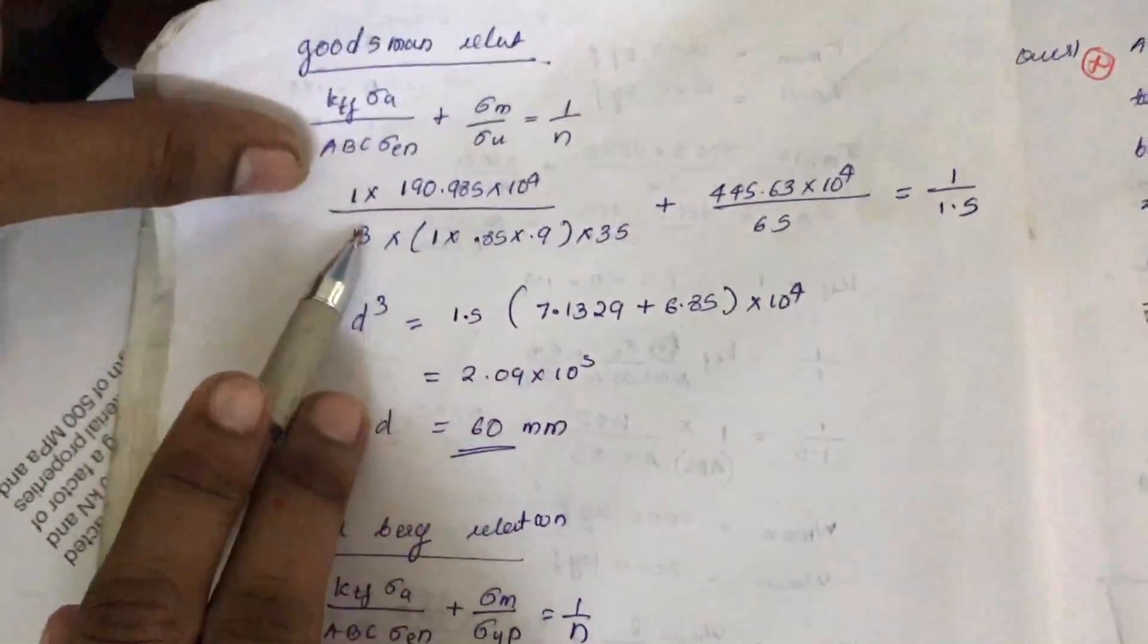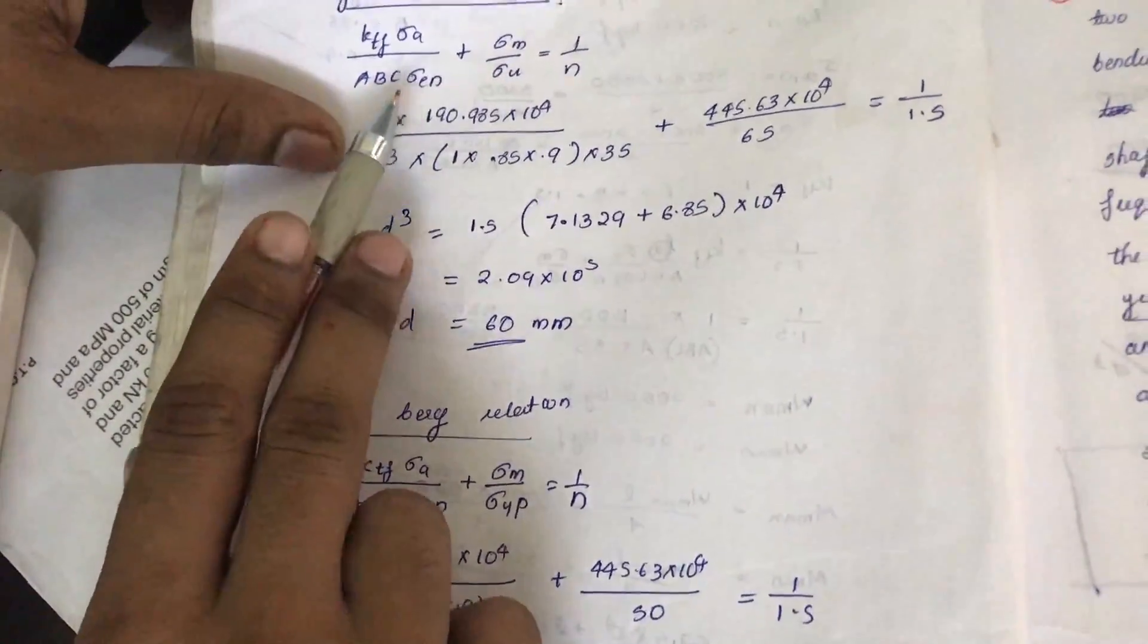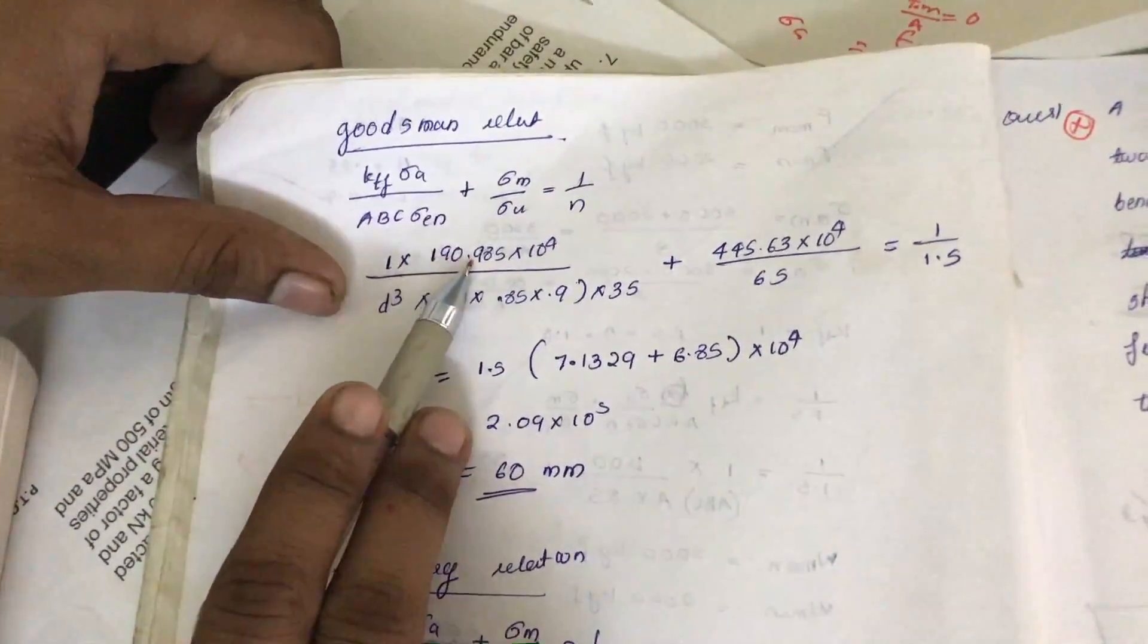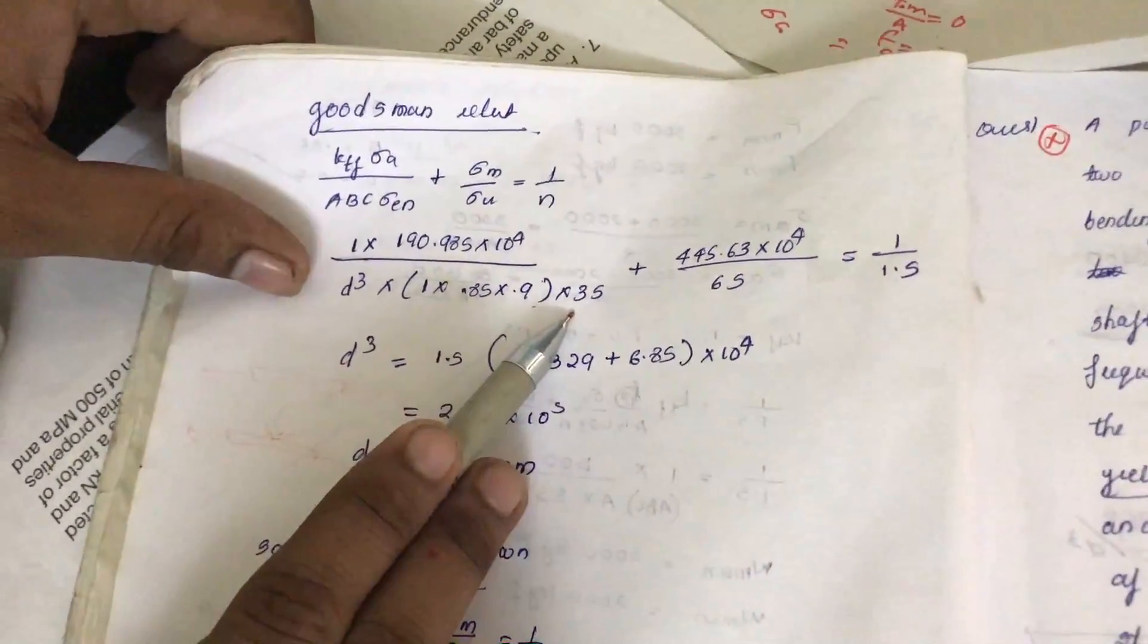K_tf is 1, not given, so we assume the stress concentration factor is 1. Sigma A equals 190.985/D³. The values A, B, C are written.